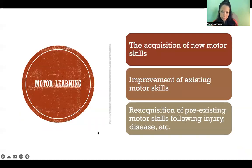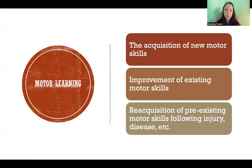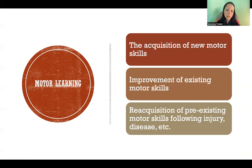Motor learning is either the acquisition of a new motor skill — a new skill that we haven't used before — the improvement of a motor skill that we already have, so improving performance of that skill, or the reacquisition of a motor skill that we had before but have to relearn, like following an injury or something like that.